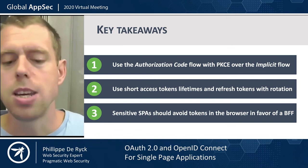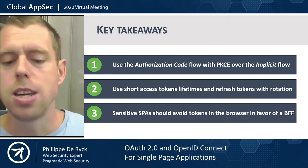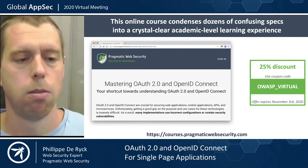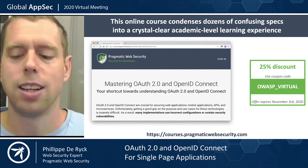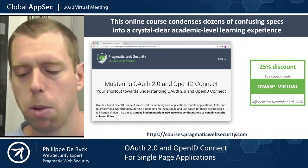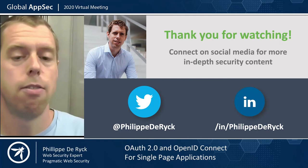That's essentially three key takeaways based on what we saw in this session. If you want to know more, you can dig through dozens of specifications, or I also built an online course that covers OAuth and OpenID Connect in a lot of detail — give it a look. There's a 25% discount until November 3rd. The URL is courses.pragmaticwebsecurity.com. With that, I want to thank you for watching and invite you to connect on social media. If you have any feedback, don't hesitate to let me know.